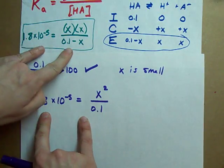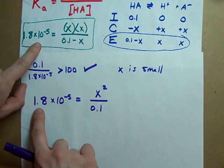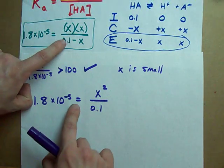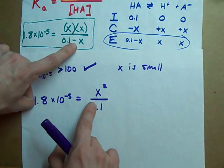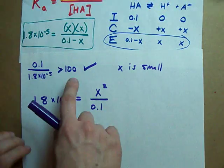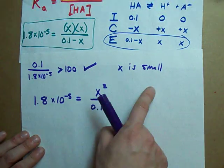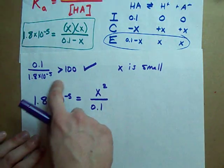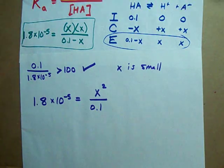It means that 1.8 times 10 to the negative 5 is X squared divided by 0.1. Notice these two equations and how they're similar. 1.8 times 10 to the negative 5 equals X squared over, and I was able to just drop the minus X, because we're assuming X is small. And again, the reason we can make that assumption is that this ratio is bigger than 100.